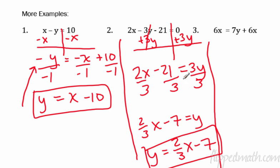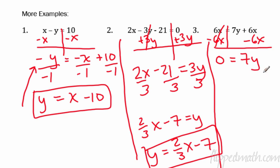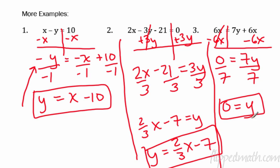Number 3 is kind of weird — the Y is over on one side. Get rid of the X first: subtract 6X. Draw the line down the equal sign; 6X minus 6X cancels, leaving 0 equals 7Y. Now divide each side by 7: you're left with 0 equals Y. That is slope-intercept form — it's solved for Y. It's the same as Y equals 0X plus 0, which simplifies to Y equals 0.